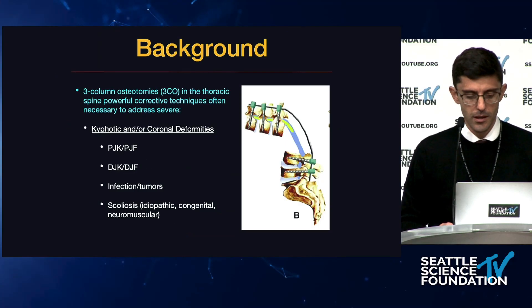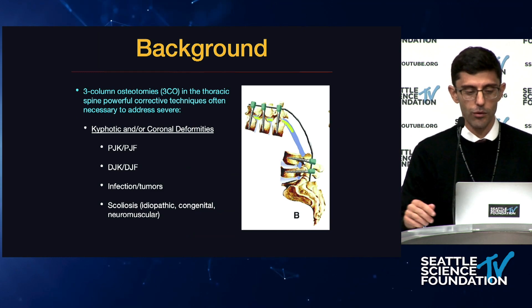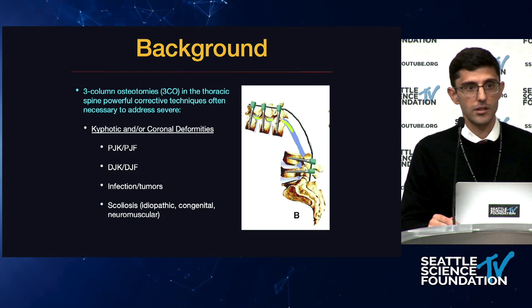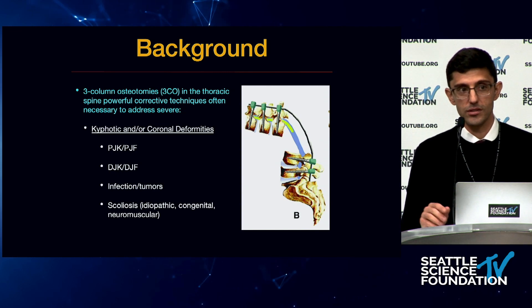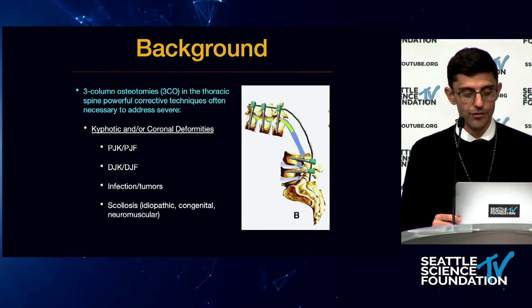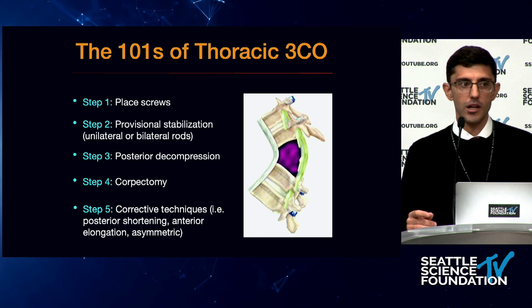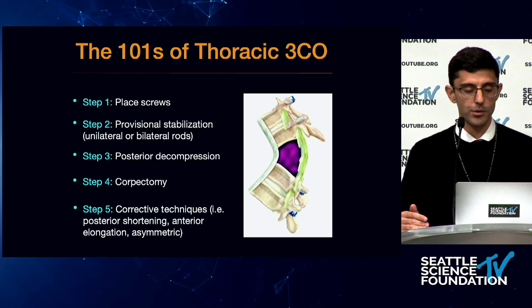By way of background, three-column osteotomies in the thoracic spine are powerful corrective techniques that are often necessary to address severe kyphotic and coronal deformities from a variety of pathologies — junctional failures either proximal or distal, infections, tumors, scoliosis. The scoliosis world is vast, from idiopathic neglected deformities to congenital and neuromuscular cases.